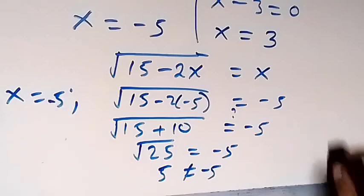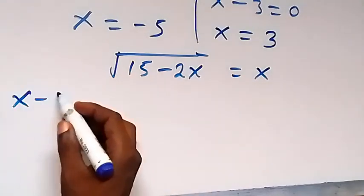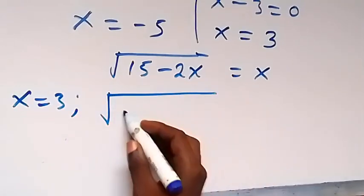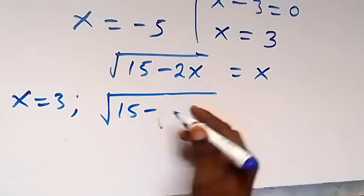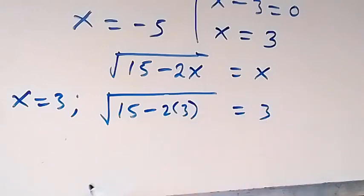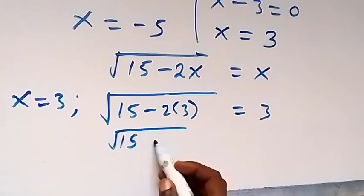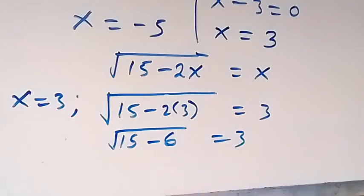Let's put x equals to 3. When we substitute here, this becomes 15 minus 2 times 3. Then x equals to 3. We have square root of 15 minus 6 is equal to 3. 15 minus 6 gives us root 9 is equal to 3.